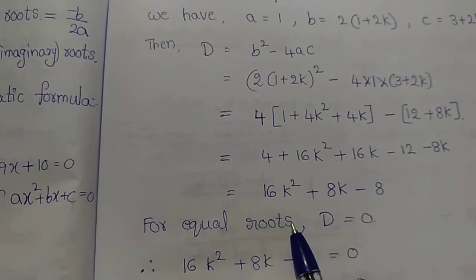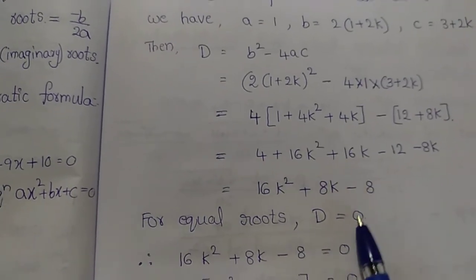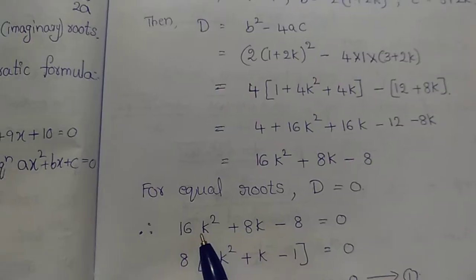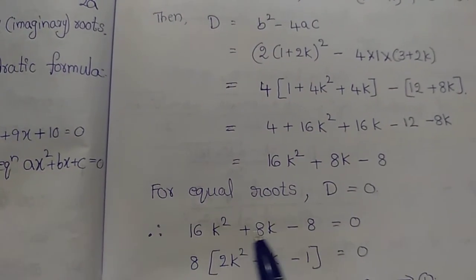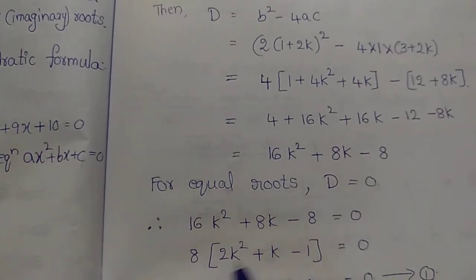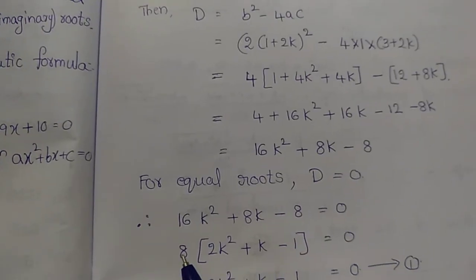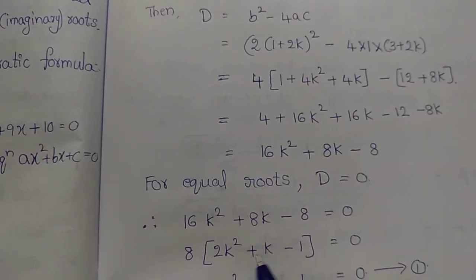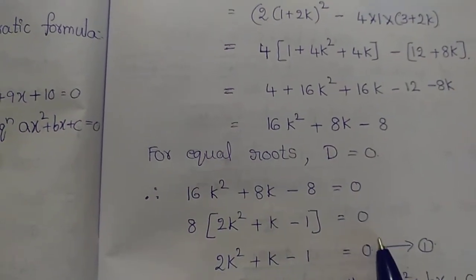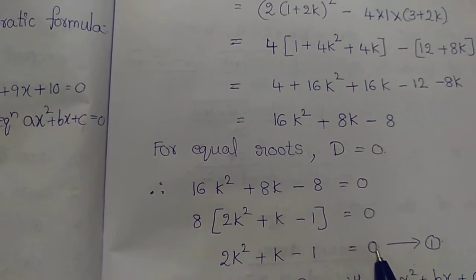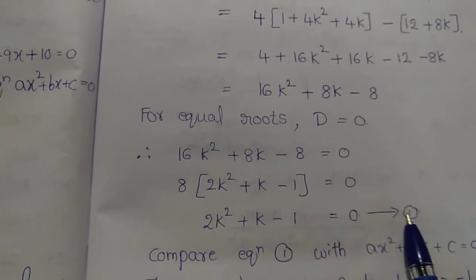For equal roots, D equals 0. So 16k squared plus 8k minus 8 equals 0. Dividing by 8: 2k squared plus k minus 1 equals 0. Let this be equation 1.